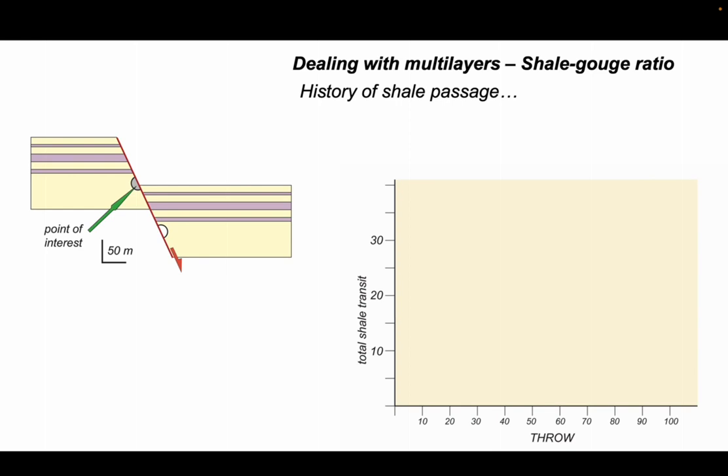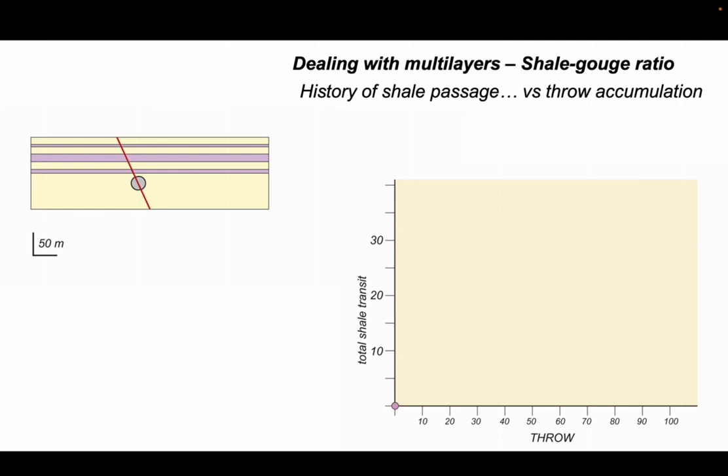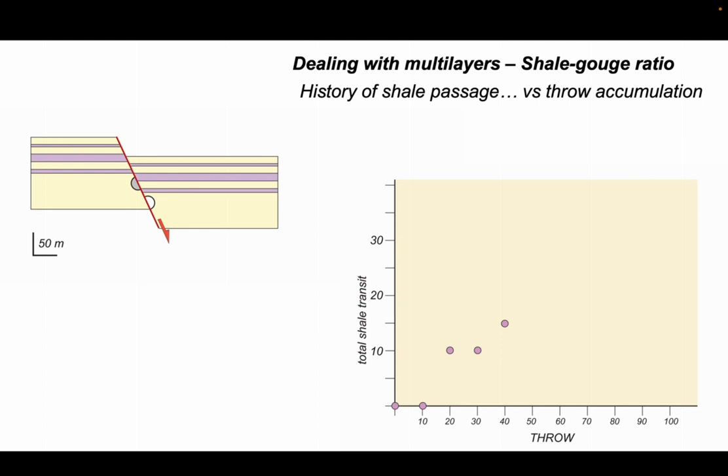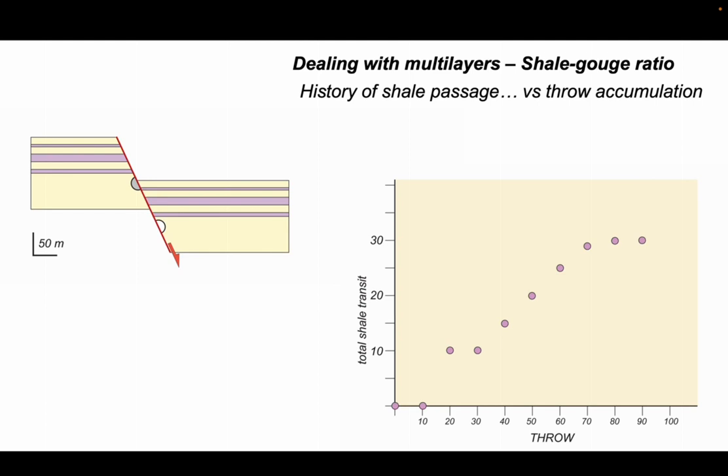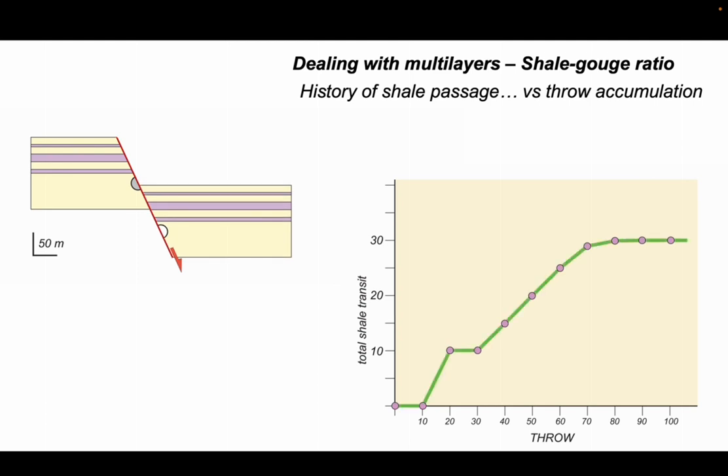So let's just look at the history of shale passage across that point. What I've done here is plot up the total amount of shale that will go past that point as the throw increases along the bottom axis there. Let's see how the throw accumulates. It starts off with no throw, no shale past that point yet. The throw's increasing but still no shale arrived. Here comes some shale, and then the throw increases. The next shale arrives and keeps coming past that point of reference like this to this point here. The next shale arrives and then eventually no more shale arriving. So that's the history of the passage of shale past that particular point in the footwall to the fault.